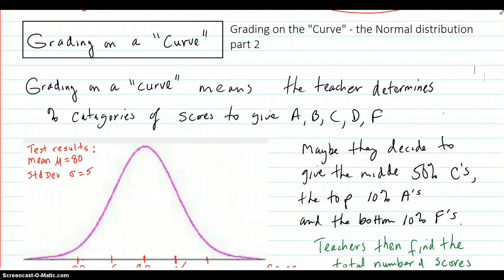Here is part 2 of a video, Grading on a Curve, the Normal Distribution Part 2. So, grading on a curve means that the teacher determines percent categories of scores on the test in order to give out A's, B's, C's, D's and F's.